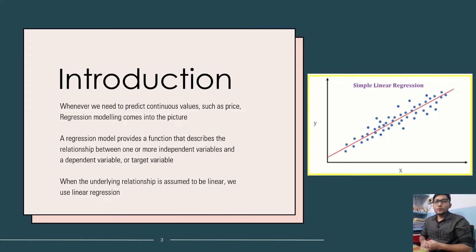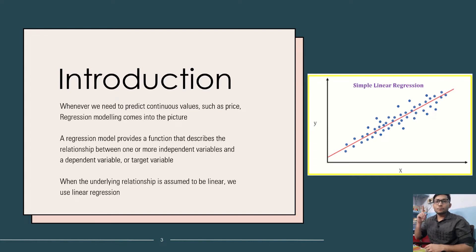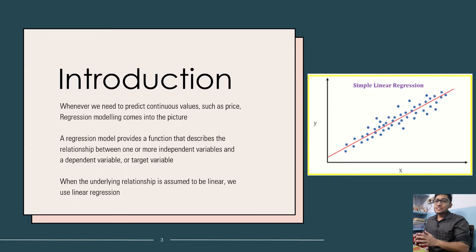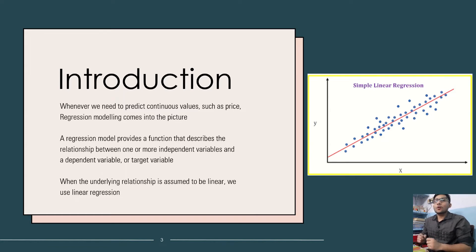When we talk of statistical tests, linear regression is one of them because it helps us determine the relationship between two or more variables. When the underlying relationship is assumed to be linear, we use linear regression. When the relationship between the independent variables and the predicted variable is linear, we use linear regression. You understand now why our first assumption is necessary — if the relationship between independent and dependent variable is non-linear, then we cannot use linear regression.